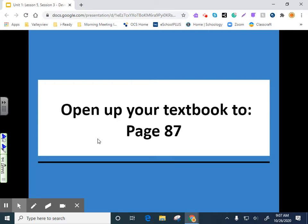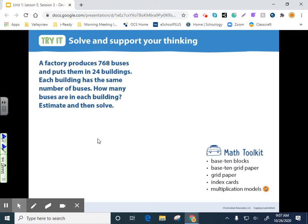All right. Open up your textbook to page 87. You'll see the school bus. For this one, again, I just want to review the different parts of the problem. Factory produces 768 buses and puts them in 24 buildings. Each building has the same number of buses. How many buses are in each building? Estimate and then solve. Why don't we just go ahead and solve this one? So let's set up the problem. We have 768 buses divided between 24 buildings. So we would set the problem up like this.